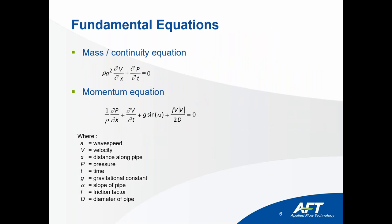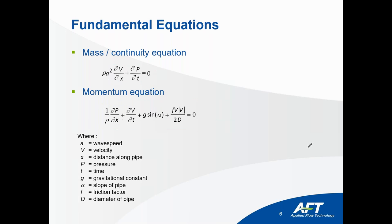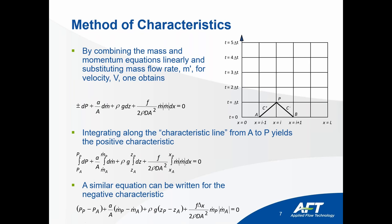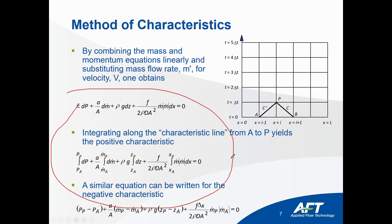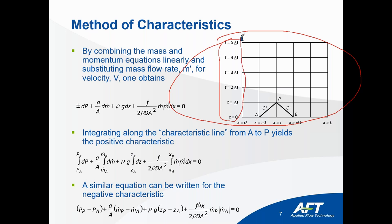Without going too much into the math, the key working equations for the transient that Impulse solves are the transient mass balance and the transient momentum balance. These are solved using the method of characteristics. The important thing to focus on is the method of characteristics grid — in order to do the transient calculations, you have to figure out the time step and break up your pipes into sections, or stations.